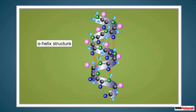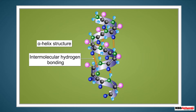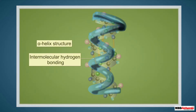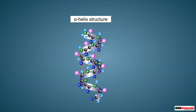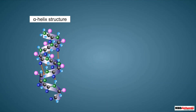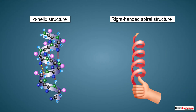The secondary structure shown right now is called the alpha helix structure. In this structure, the hydrogen bonding is intermolecular, occurring between the amino acids of adjacent turns. This results in the twisting of the structure into a right-handed spiral structure.